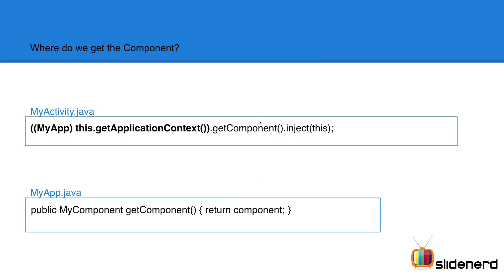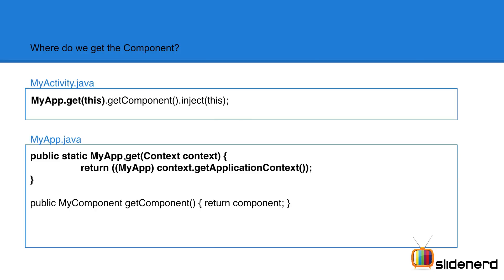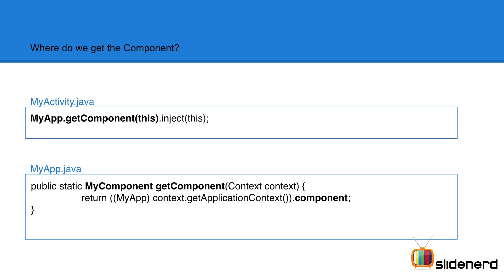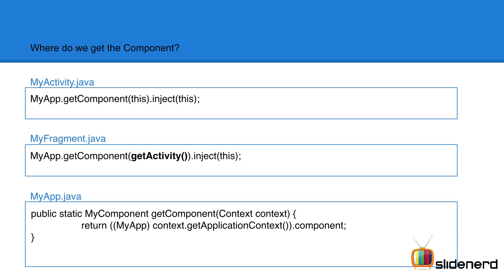This is a lot of code, but there are some shortcuts. You can make a static method inside your custom application class called 'get' that takes a context and constructs everything. Inside your activity, since it's static, you can say MyApp.get(), pass a reference to your activity as the context, then call getComponent() and inject(). Another shortcut: a static method called myComponents() that directly gives you the component object, so you just pass your activity reference and call inject().